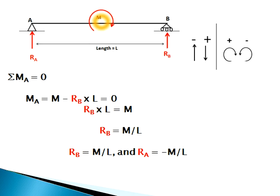Taking moment at A: the applied moment M creates a clockwise effect, so it's positive. Rb into L creates an anticlockwise moment, so it's negative. Therefore: M minus Rb·L = 0, which gives Rb = M/L (positive).